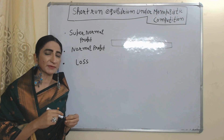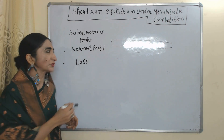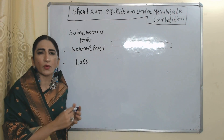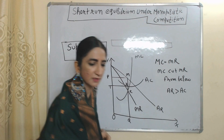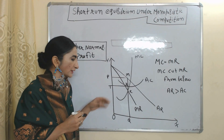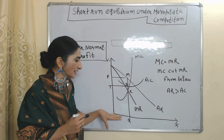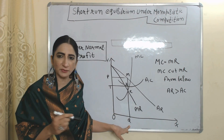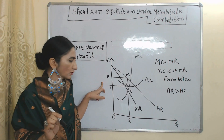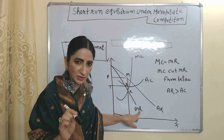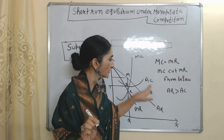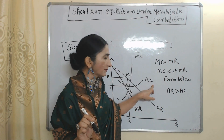Now we are going to talk about short run equilibrium under monopolistic competition. In the short run, a monopolistic firm mainly has three situations: super normal profit, normal profit, and loss. We will discuss each one. In the diagram, on the X-axis we have output, on the Y-axis we have price, revenue, and cost. MR is the marginal revenue curve, AR is the average revenue curve, AC is the average cost curve, and MC is the marginal cost curve.